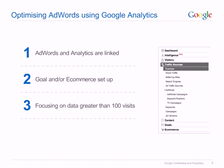Secondly, you should ensure that you have goals set up in your account and, if appropriate, e-commerce tracking set up. This will ensure that you have a metric to measure the success of your online advertising. And finally, as a rule of thumb, focus on data sets within the hundreds so as to dilute any anomalies.